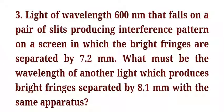Light of wavelength 609 nanometers falls on a pair of slits, producing an interference pattern on a screen in which the bright fringes are separated by 7.2 mm. What must be the wavelength of another light which produces bright fringes separated by 8.1 mm, using the same apparatus?